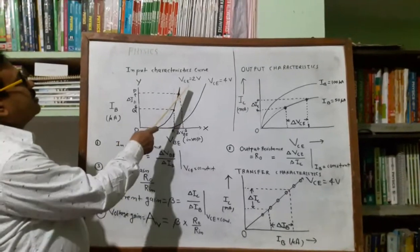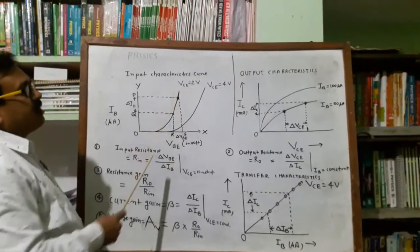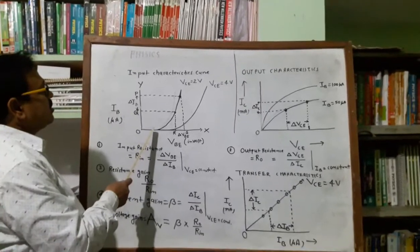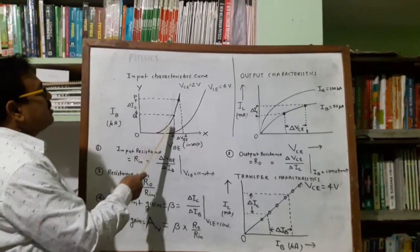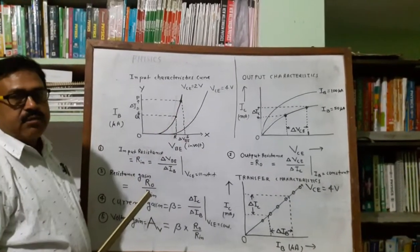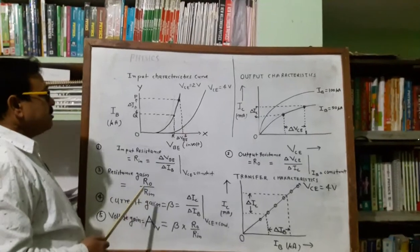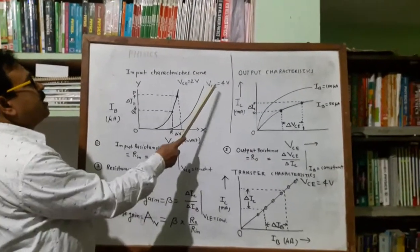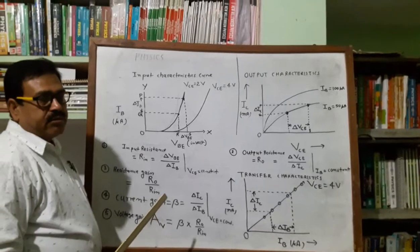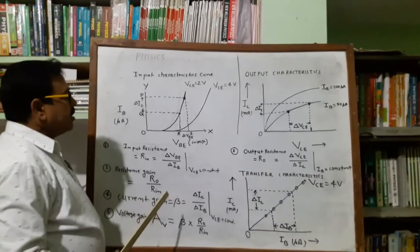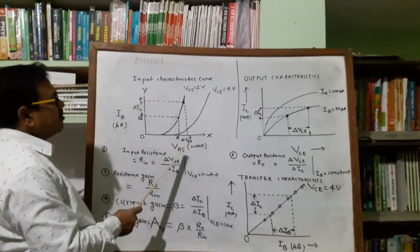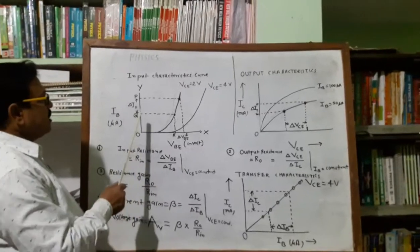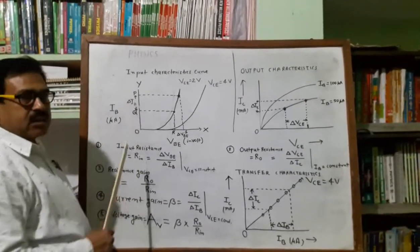We see that at a given constant collector voltage of 2 volts, the graph obtained goes in the upward direction — a curve line is obtained. Similarly, when we change the value of the collector voltage up to 4 volts and once again find out the values of the base-to-emitter voltage, we get different values of the base current.